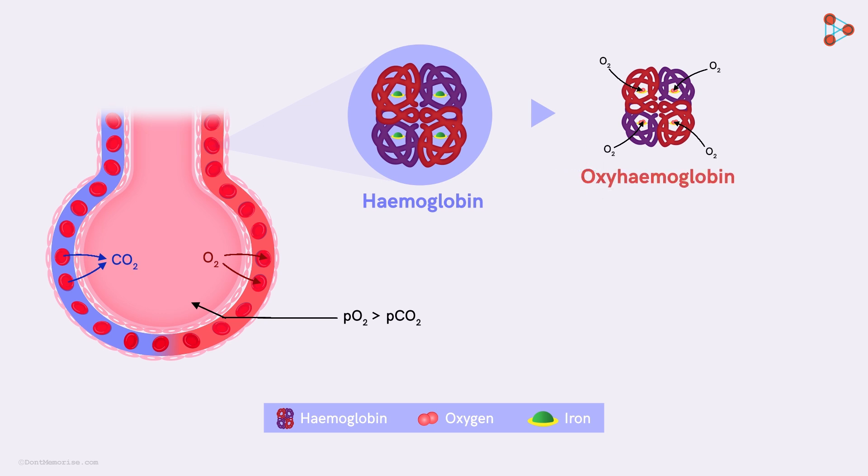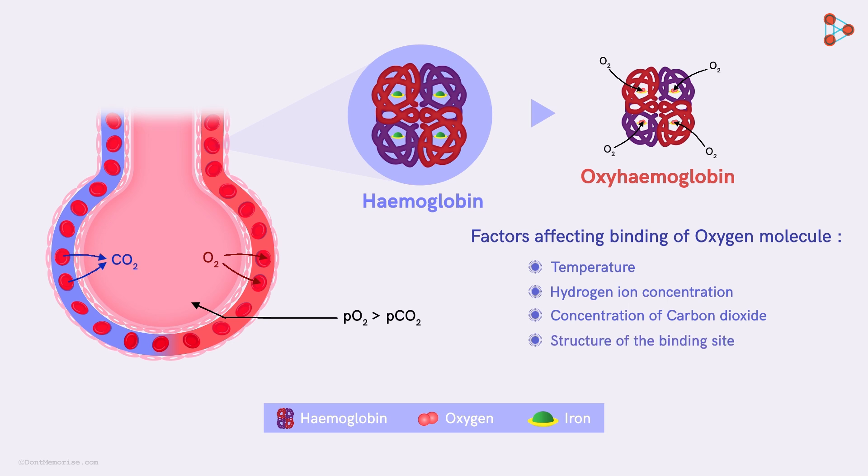But this complex formation is not very easy. Factors like temperature, hydrogen ion concentration, and also the concentration of carbon dioxide molecules around, influence the binding of the oxygen. Along with this, there is one more factor that accounts for the binding. It is the structure of the binding site.